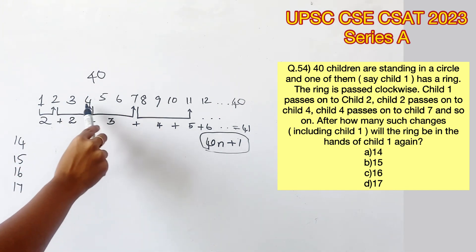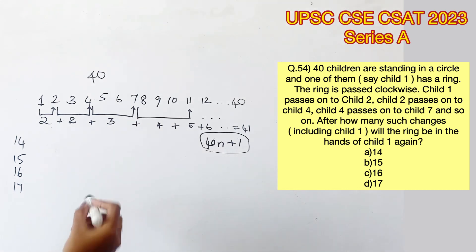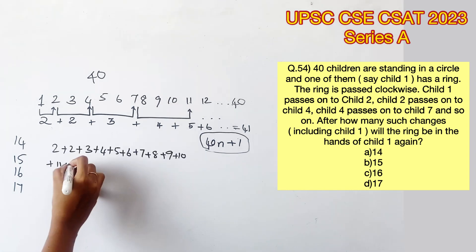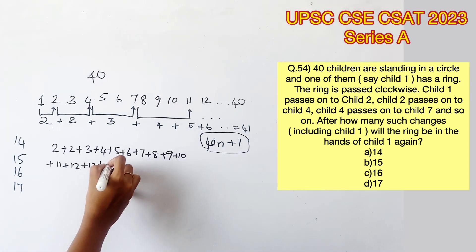Now if you check, adding the changes will provide us with a value that's equal to the position of the child who's holding on to the ring. Since the minimum number of changes given in the option is 14, let's check what position we will reach after 14 changes.